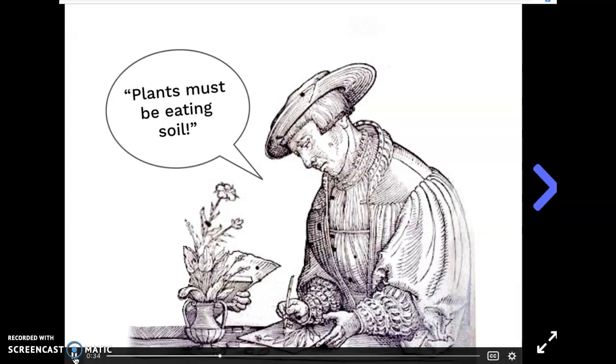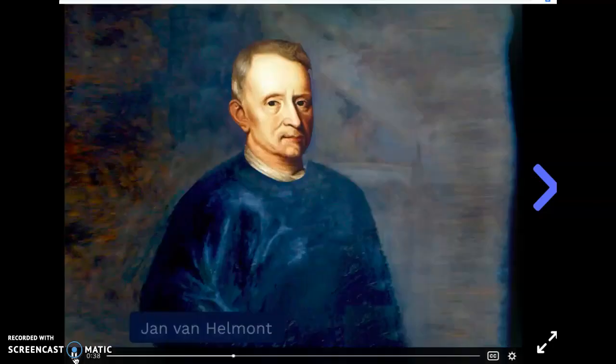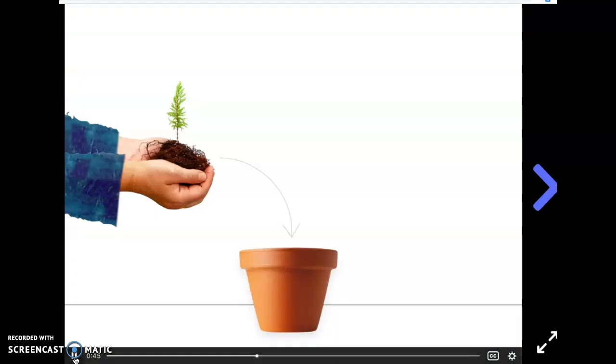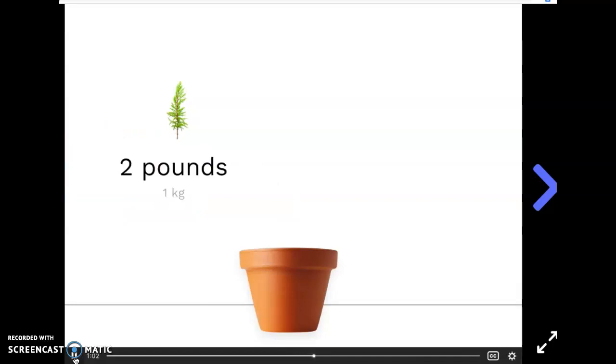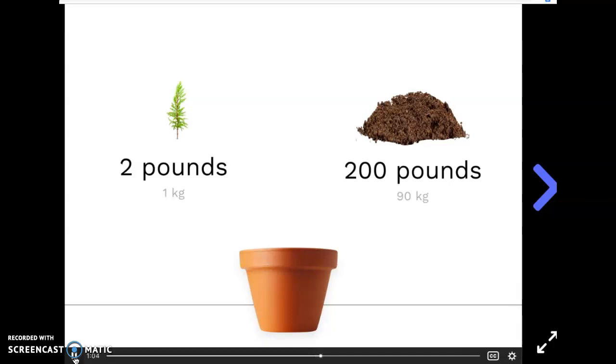But no one had ever actually checked to see if this was true. Eventually, one scientist got really curious about this. He wondered, are we sure the plants eat soil? And he came up with a very clever experiment which he hoped would help him solve the mystery. Here was his idea. He decided that he would plant a young tree in a pot. Before doing that, he would carefully weigh the tree and the soil that he was going to place into the pot. The tree weighed about two pounds, the soil about 200 pounds.